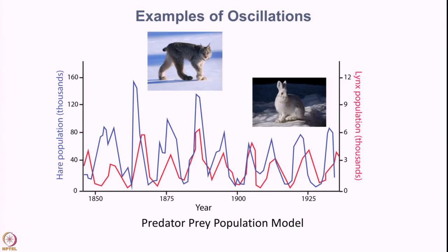Here is another example of oscillations. This graph illustrates how the population of two different species varies over time. One is the hare population, shown on the left vertical axis with values shown by the blue line.